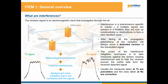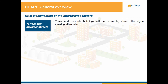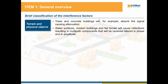Usually the methods that are implemented at transmission are preventive and the ones implemented at reception are corrective. Let's briefly review the factors that cause interferences and the signal distortion. First we have the terrain and physical objects — for example, trees and concrete buildings will absorb the signal causing attenuation, while water surfaces, modern buildings and flat terrain will cause multiple reflections resulting in multipath components that will be received altered in both phase and in amplitude. Hills on the other hand easily cause diffraction and also absorption.